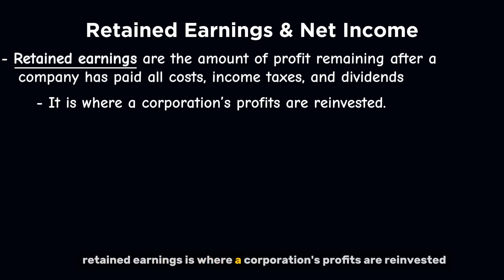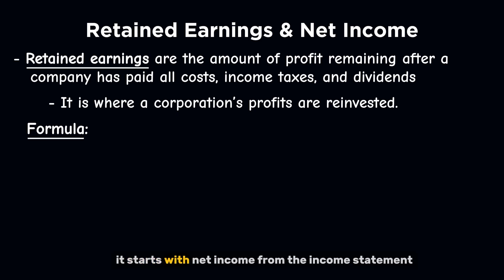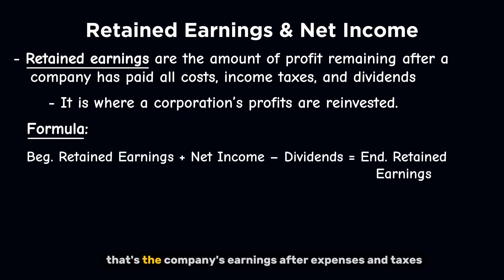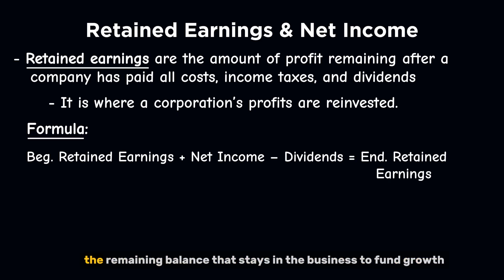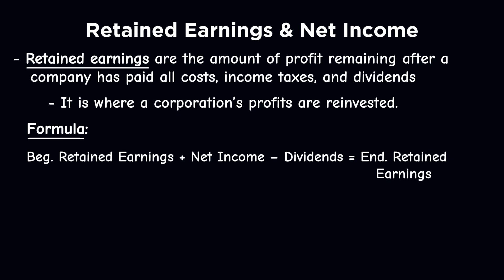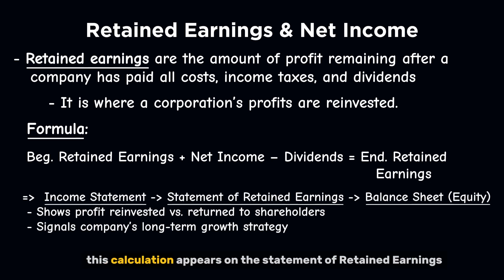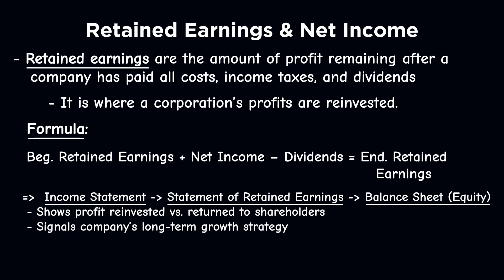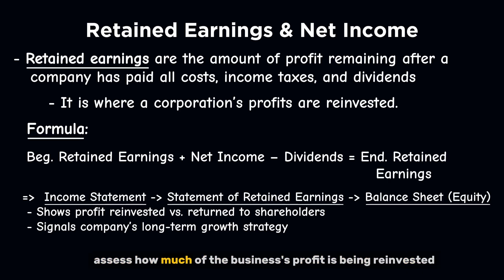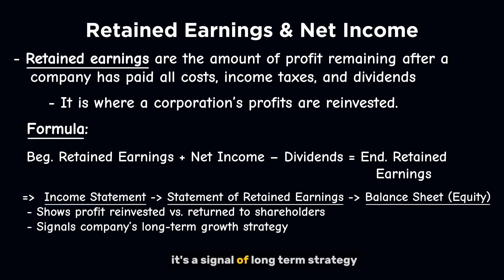Retained earnings is where a corporation's profits are reinvested. It starts with net income from the income statement — the company's earnings after expenses and taxes. From there, you subtract dividends paid to shareholders. The remaining balance stays in the business to fund growth, pay down debt, or prepare for the future. The core formula: beginning retained earnings plus net income minus dividends equals ending retained earnings. This appears on the statement of retained earnings, and the final number flows into the equity section of the balance sheet. Retained earnings helps investors and managers assess how much profit is being reinvested versus returned to shareholders — it's a signal of long-term strategy.